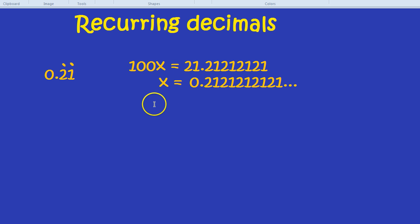You minus them. What is 100x take away x? That would be 99x. Now, 21.2121212121 take away 0.212121 etc.